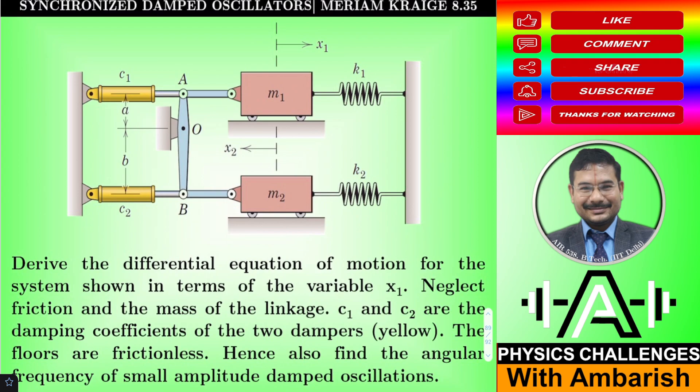So synchronized damped oscillators, let me read out the problem for you. Derive the differential equation of motion for the system shown in terms of variable x1. So what's happening here, there is one floor and this mass which can slide on this frictionless floor here and there's another trolley which can frictionlessly slide over this, or maybe just call it a block. This is spring connected k1 and k2. And then this is connected through a pivot joint to this vertical link at point A, it's pivoted at A and this in turn is pivoted to a damper C1.